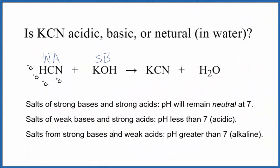So we're looking for a weak acid and a strong base. Here's a weak acid and a strong base. And according to the rules, the pH should be greater than 7. That means it'll be alkaline, also called basic.